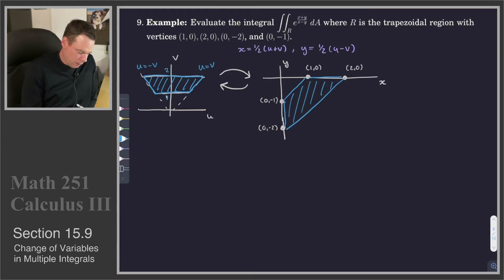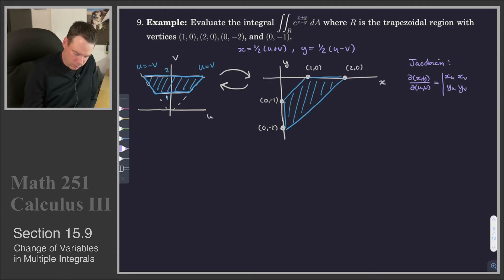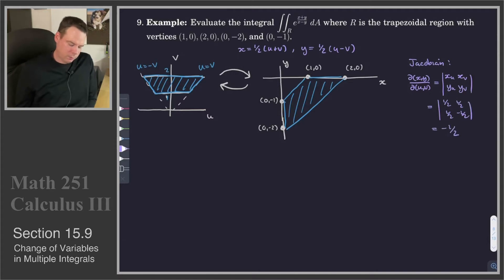The last thing we need to know is our Jacobian. The Jacobian is d(x,y)/d(u,v), which is the determinant of x sub u, x sub v, y sub u, y sub v. In that case it was one half, one half, one half, negative one half, and we worked it out to have a value of negative one half. So those were all the ingredients we needed.